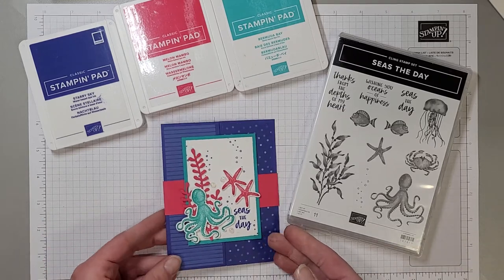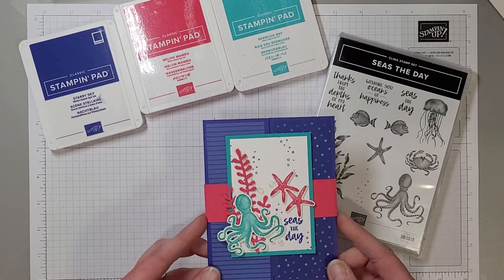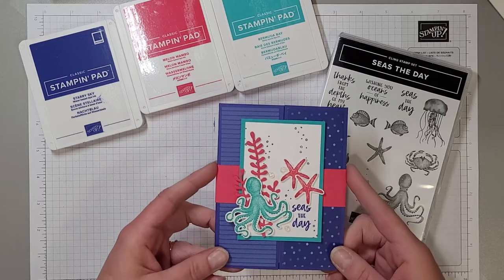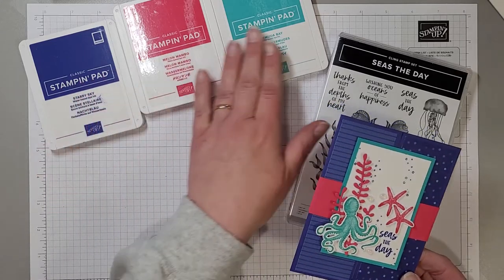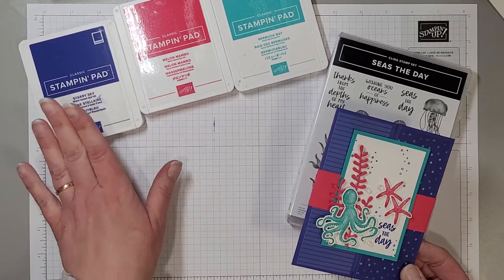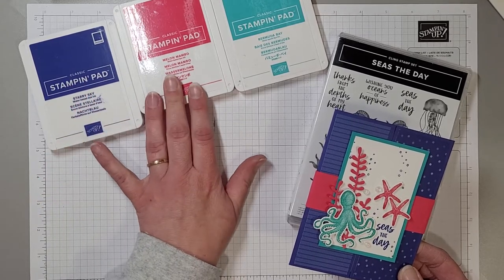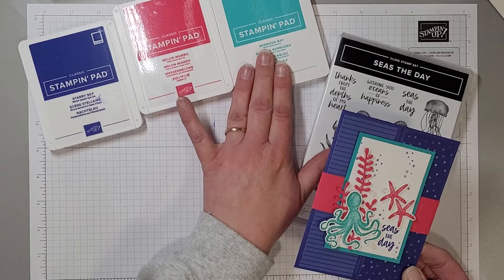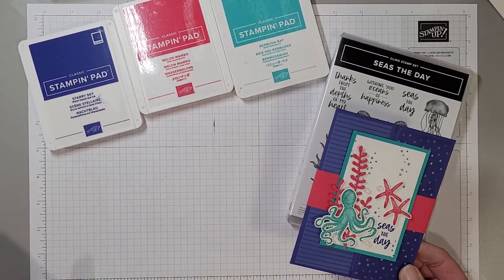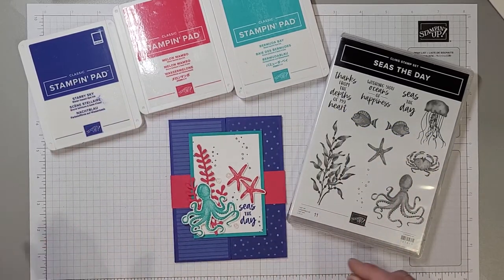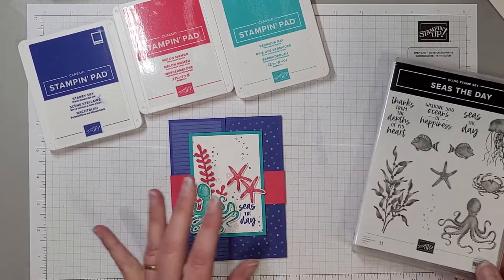We are going to make a gatefold belly band card today using this amazing new color scheme of Starry Sky, the amazing in color, Melon Mambo, one of my all-time favorites, and Bermuda Bay which complements both of these absolutely gorgeously. All right so let's get to it.